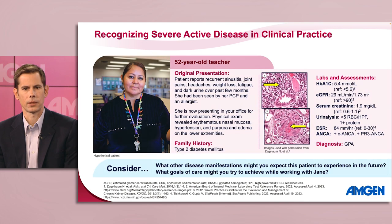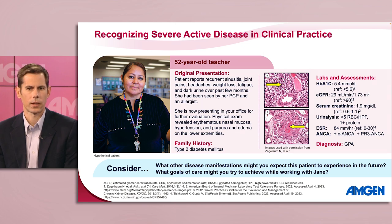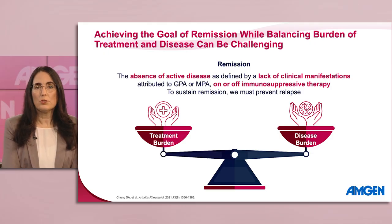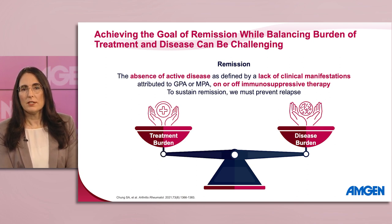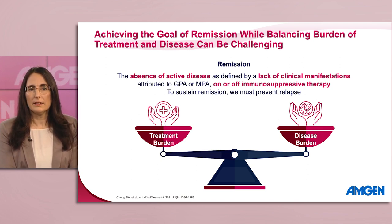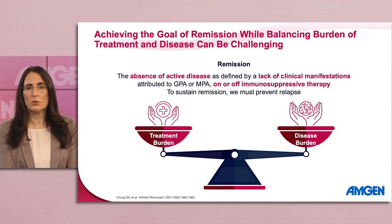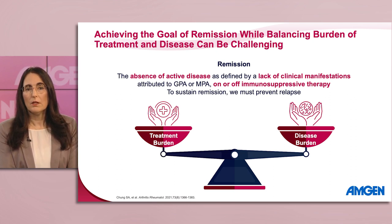Slide A shows severe interstitial inflammation as depicted by the arrow. Slide B, in the same patient, shows segmental necrotizing and crescentic glomerulonephritis. Consider what other disease manifestations you may encounter with Jane if her disease progresses and what goals of care you might try to achieve while working with her. Dr. Villaforte, what is your perspective on this?